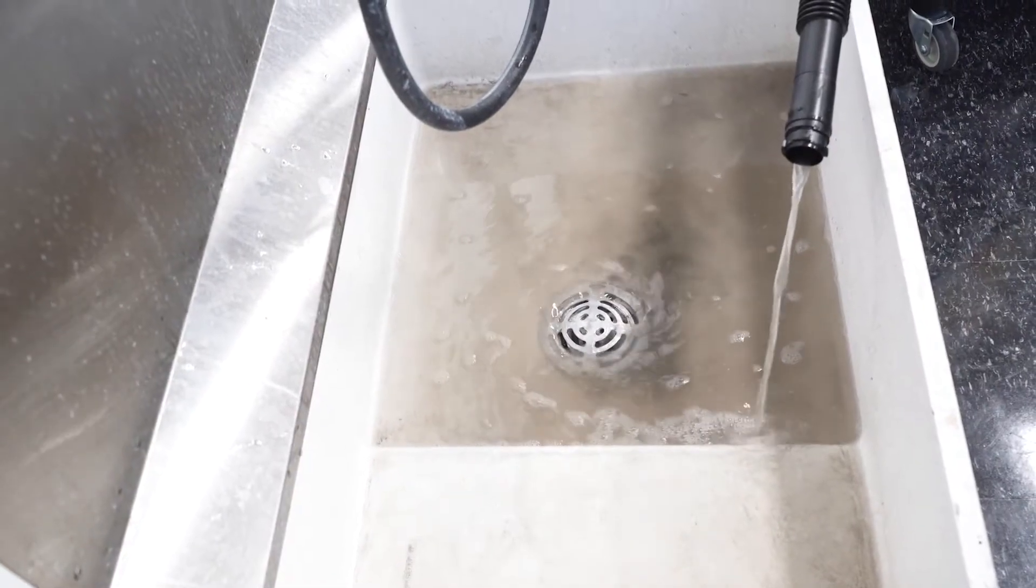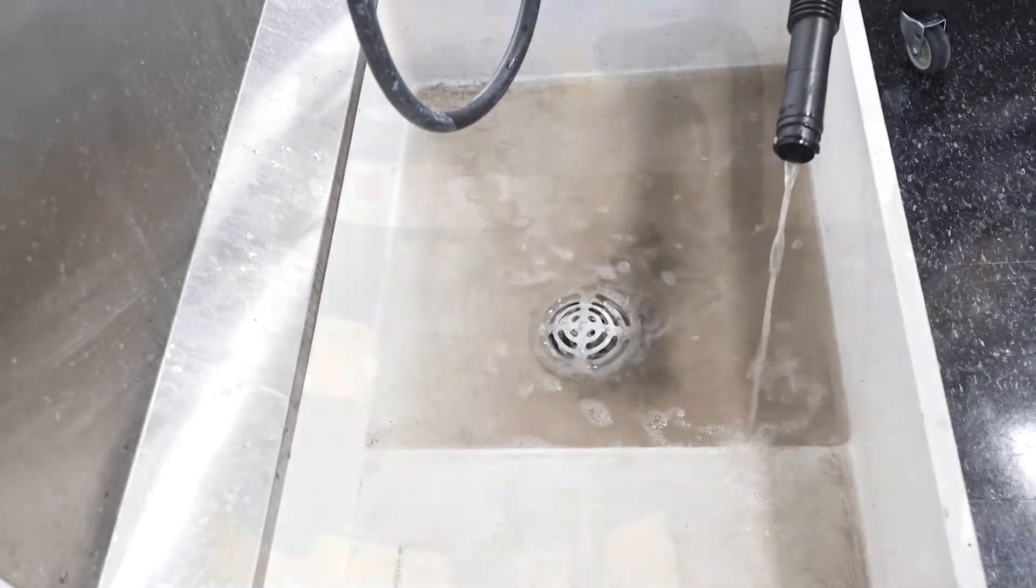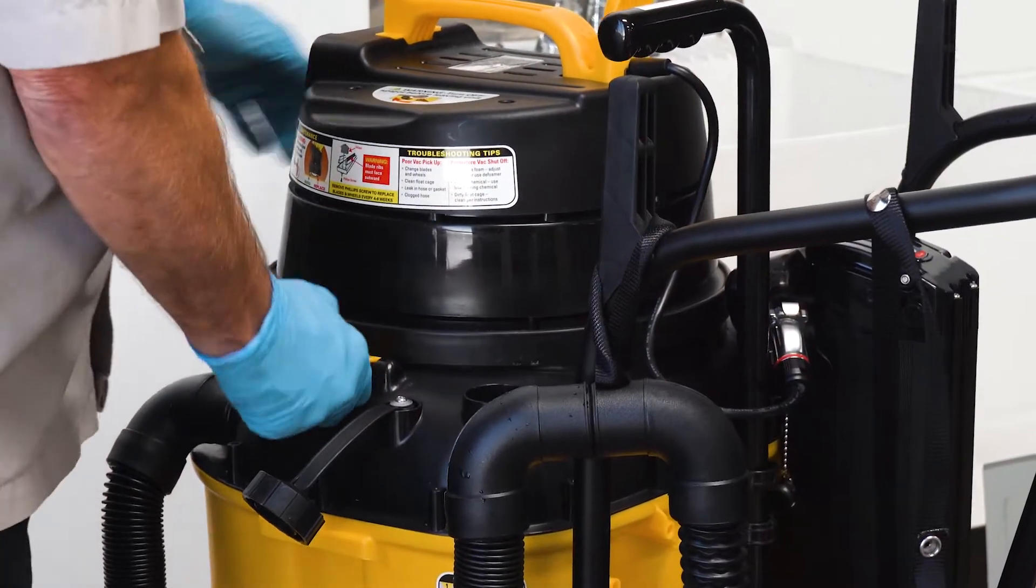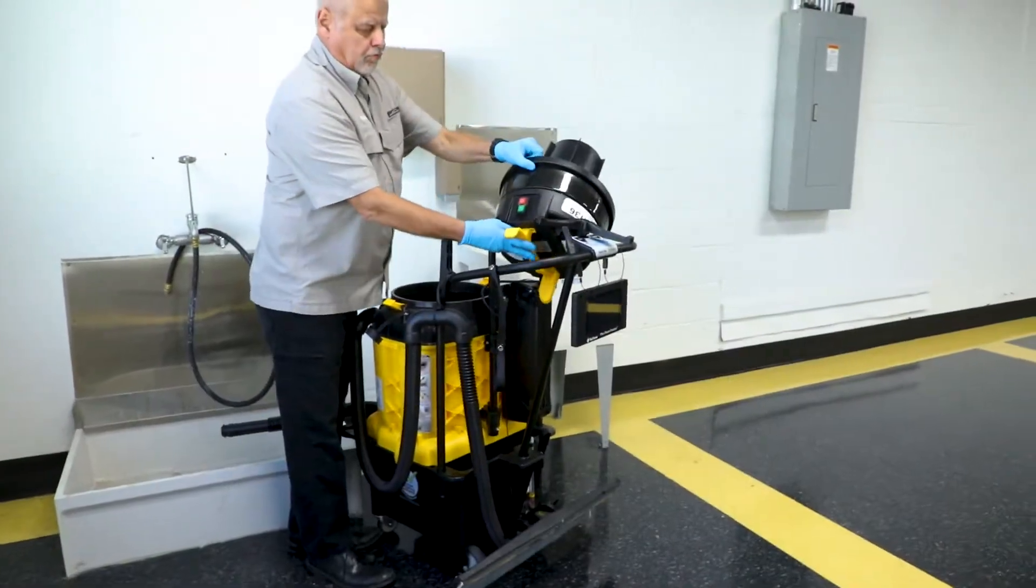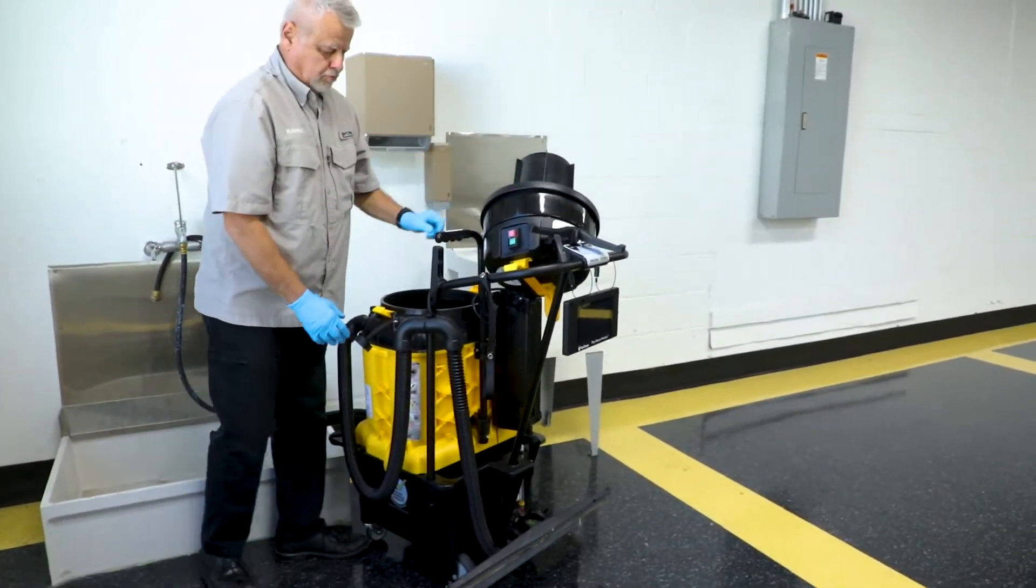When the vacuum tank is empty, leave the dump hose in the floor sink and remove the vacuum motor by unfastening the clasps on the side of the tank. Place the vacuum motor on the handle as we continue.